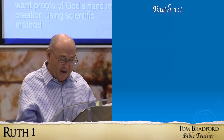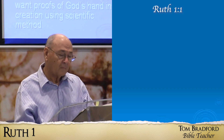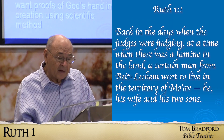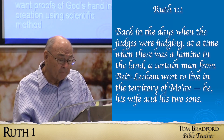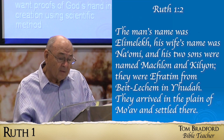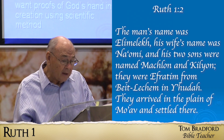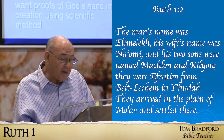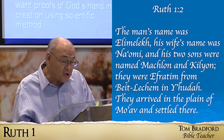The book of Ruth is page 1057 if you have a Complete Jewish Bible. 'Back in the days when the judges were judging, at a time when there was a famine in the land, a certain man from Bethlehem went to live in the territory of Moab — he, his wife, and two sons. The man's name was Elimelech, his wife's name was Naomi, and the two sons were named Mahlon and Kilion. They were Ephrathites from Bethlehem in Judah. They arrived in the plain of Moab and settled there.'